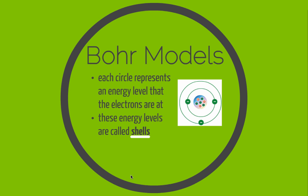In Bohr models, each circle represents an energy level that the electrons are at. So each circle tells you what energy those electrons are. The ones closest to the nucleus are the lowest energy, and then the electrons increase in energy as they get farther and farther away from the nucleus.